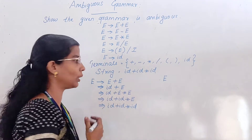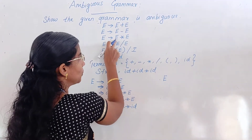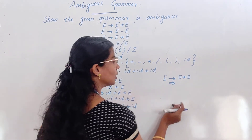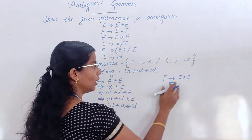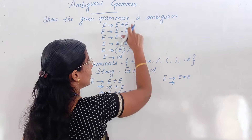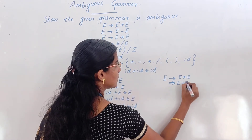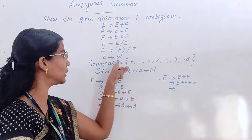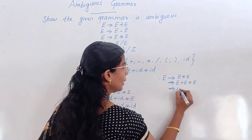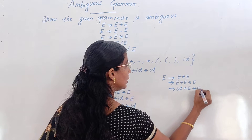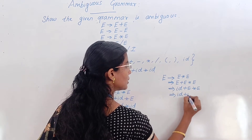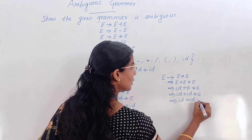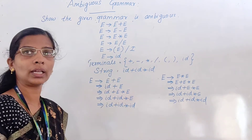I will try whether I could get one more derivation for the same string. I will start with the third rule: E tends to E star E. Again I am following left-most derivation. So this left-most E I will replace with my first rule, giving E plus E star E. Next, left-most E replaced with the last rule: ID plus E star E. Then ID plus ID star E, and finally ID plus ID star ID. Our derivation is over.